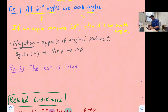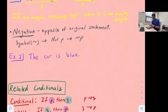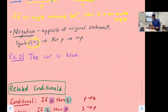Along with conditional statements, we have something called a negation. A negation is when we make the opposite of the original statement. We use a symbol — a squiggly line — and it reads not P. So negation is just the opposite. For this example, we have the statement the car is blue. To negate this, we would say the car is not blue. And that's an example of what a negation is.